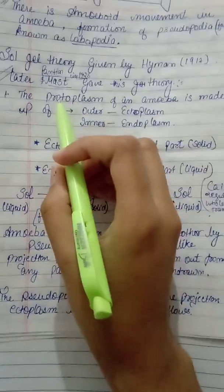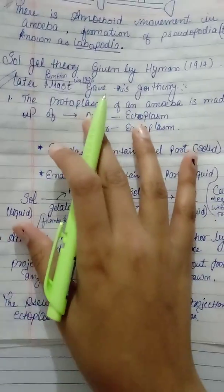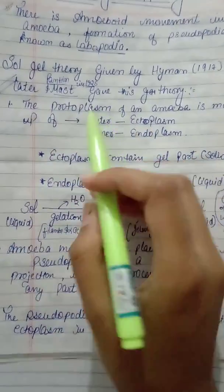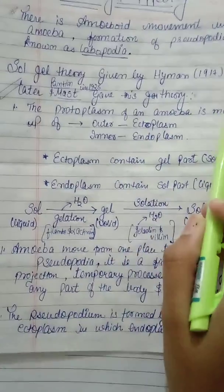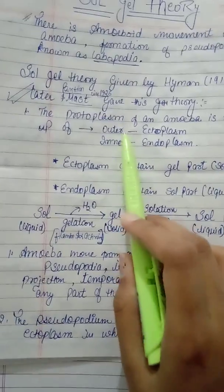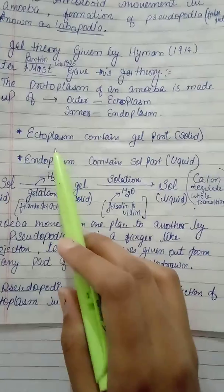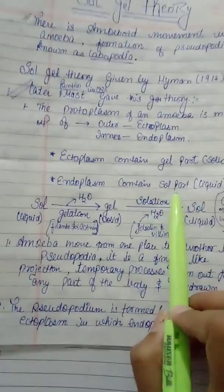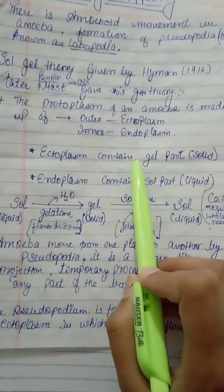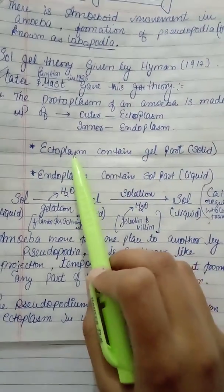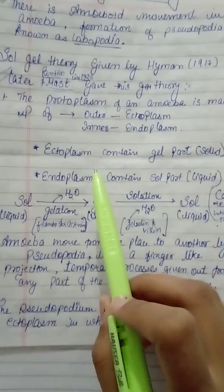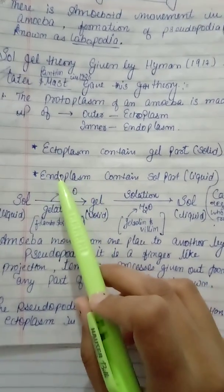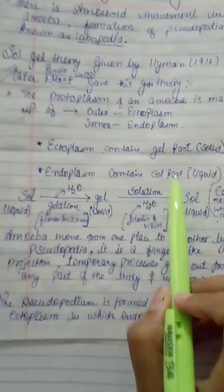The first thing that is very important in this theory to know is that the protoplasm of amoeba is made up of two things. The outer one is called the ectoplasm and the inner one is called the endoplasm. The ectoplasm contains the gel part — gel is a solid thing. And the endoplasm contains the sol part — that is a liquid thing.